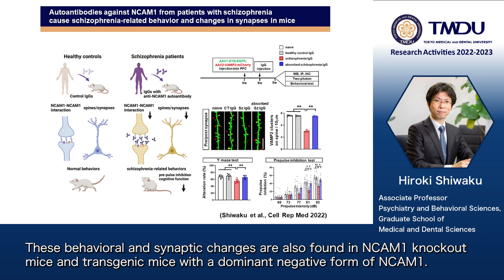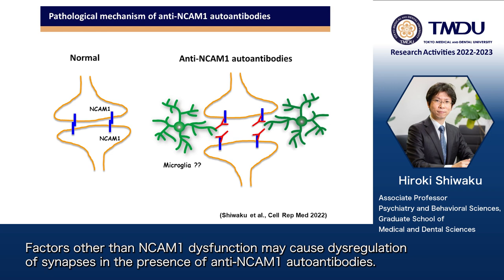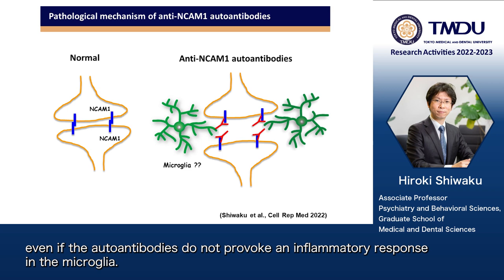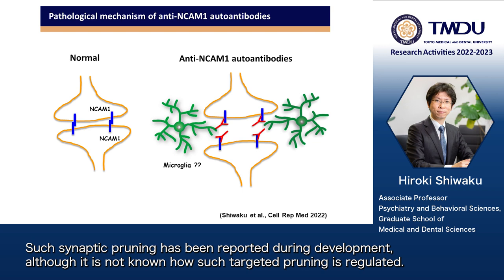These behavioral and synaptic changes are also found in NCAM1 knockout mice and transgenic mice with the dominant negative form of NCAM1. Factors other than NCAM1 dysfunction may cause dysregulation of synapses in the presence of anti-NCAM1 autoantibodies. For example, targeting of synapses by autoantibodies may result in microglial synaptic pruning, even if the autoantibodies do not provoke an inflammatory response in the microglia.